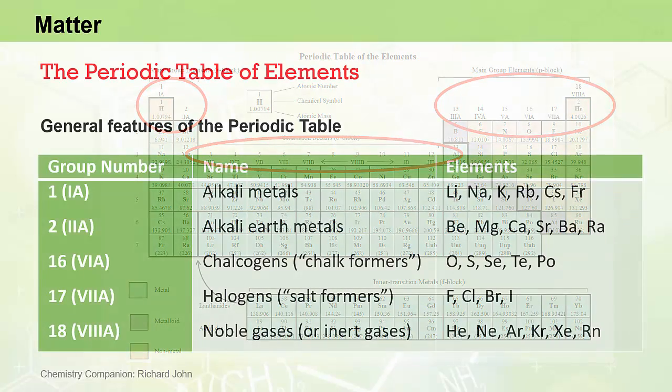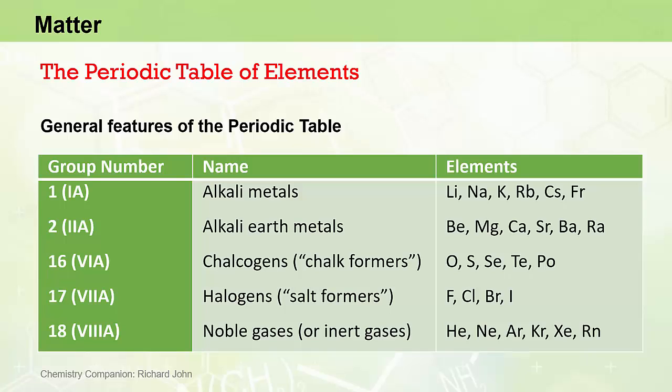The names of some of the most important groups of the Periodic Table are shown in this table here. Group one or group 1A elements are known as the alkali metals. Group two or group 2A elements are known as the alkali earth metals.